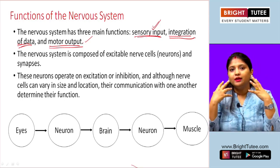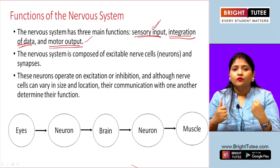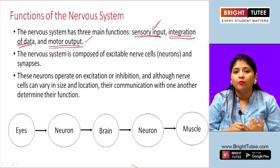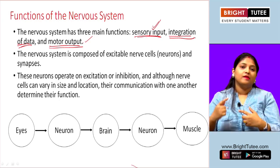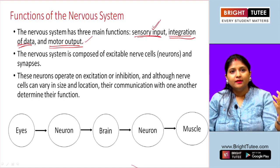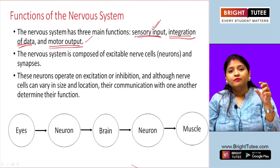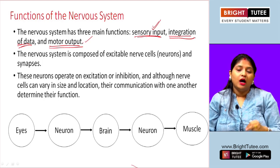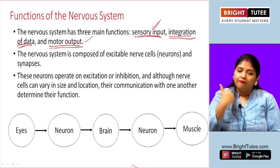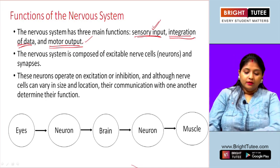Another example: during June it's very hot, so you feel hot and want to switch on the AC. Sensory input comes from your body that it is very hot, the brain processes how to solve this problem, and the solution is to switch on the AC. This happens in barely a second. These three steps — sensory input, integration, and motor output — are the most important functions of the nervous system.